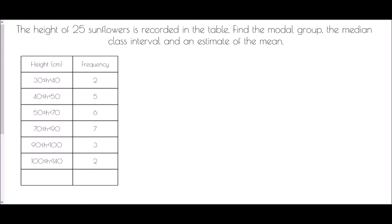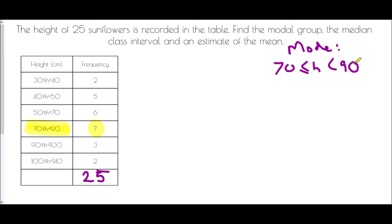We're told that the heights of 25 sunflowers are recorded in a table, and we want to find the modal group, the median class interval, and an estimate of the mean. We've been told there are 25 sunflowers so the total frequency must be 25. For the modal group, we look for the highest frequency, which is seven. The modal group is therefore 70 to 90 centimeters.